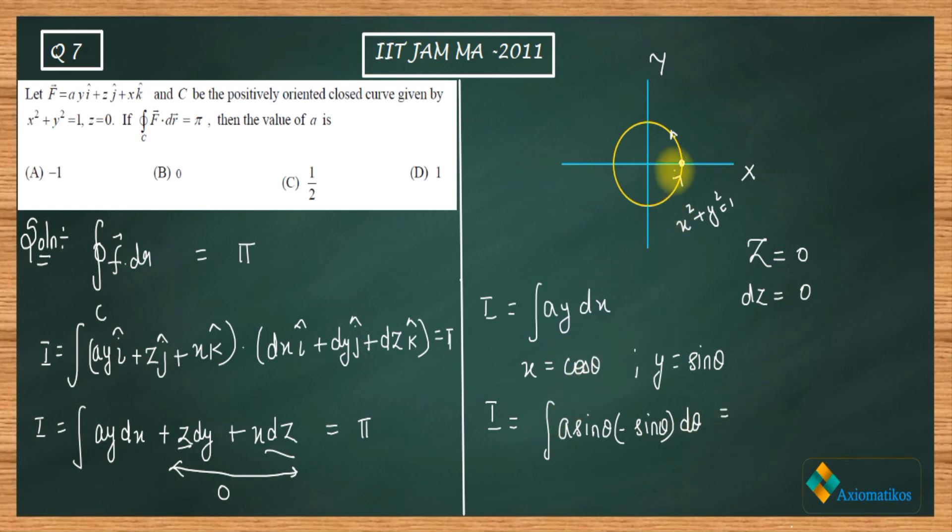And now see: from where are you moving? You are moving from here to here. That means you are completing one round, so that means you are traveling from 0 to 2π. So now it's a single integral - you can evaluate the sine square theta integral.